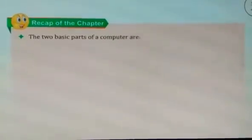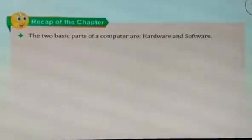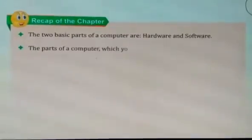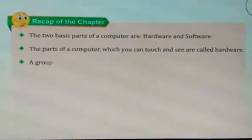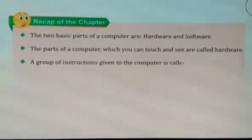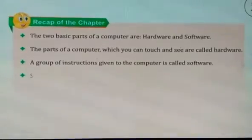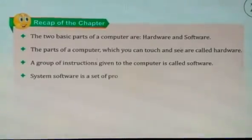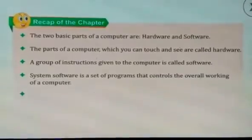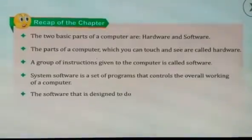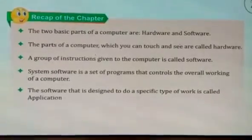Let us quickly glance through the key points discussed in this chapter. The two basic parts of a computer are hardware and software. The parts of a computer which you can touch and see are called hardware. A group of instructions given to the computer is called software. System software is a set of programs that controls the overall working of a computer. The software that is designed to do a specific type of work is called application software.